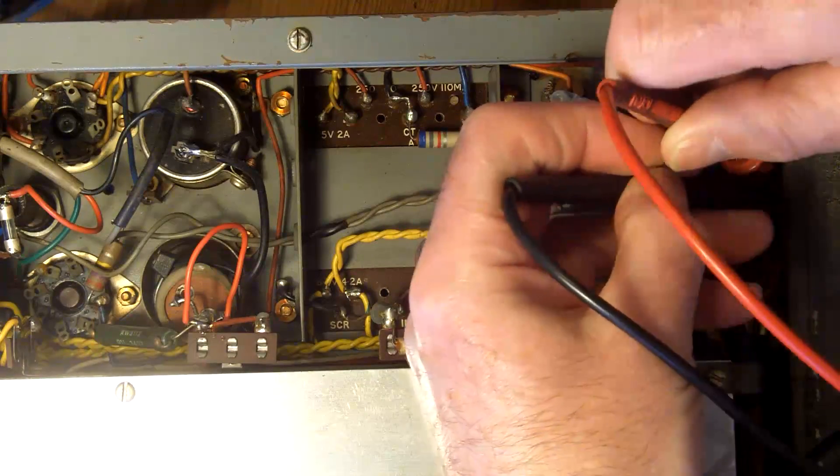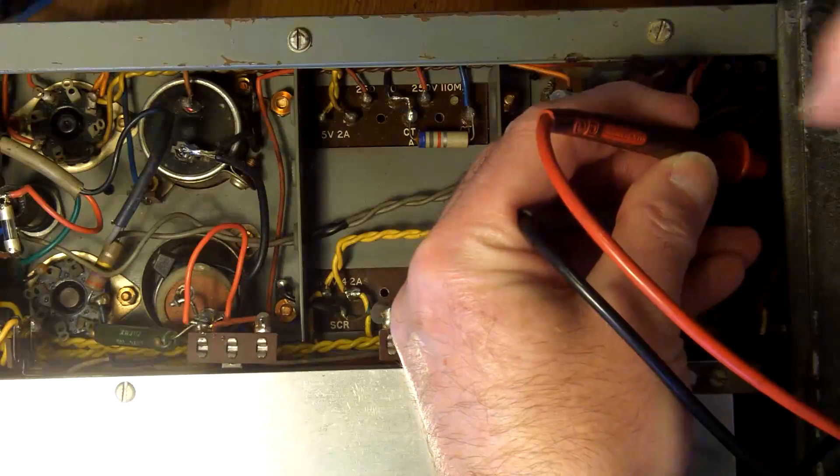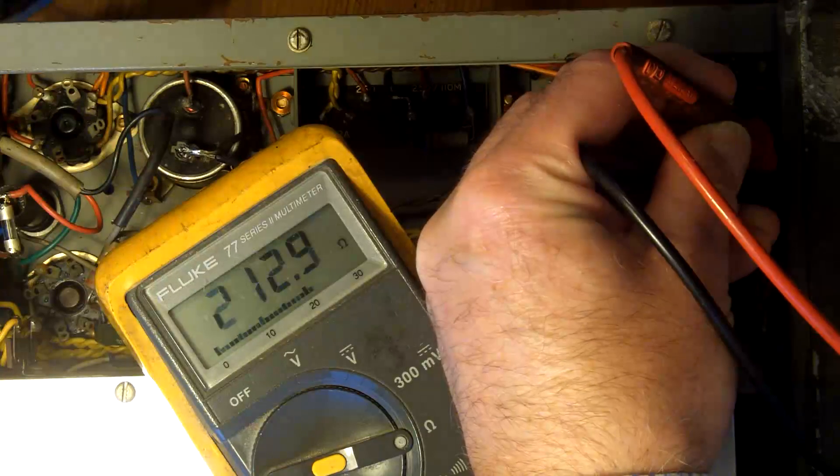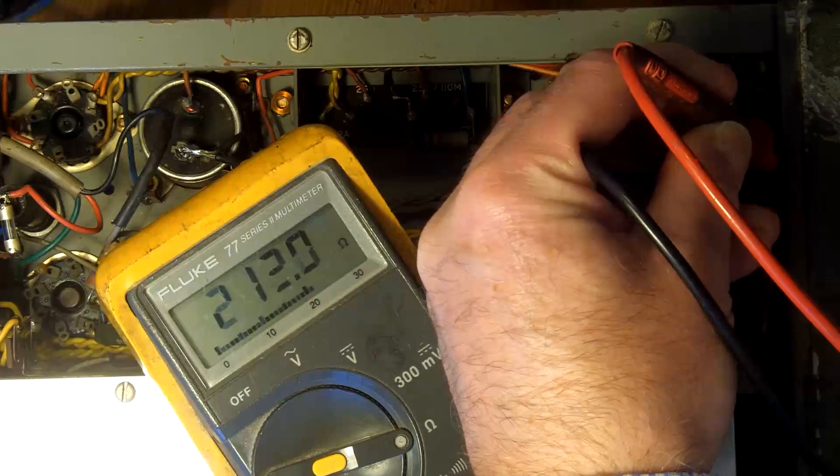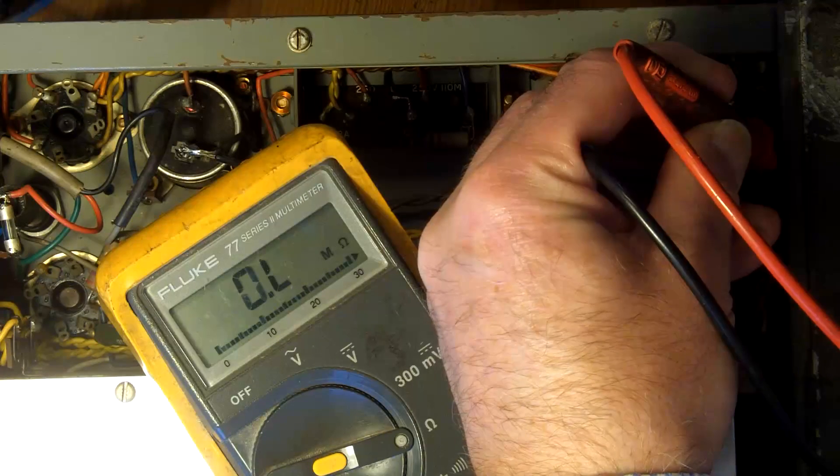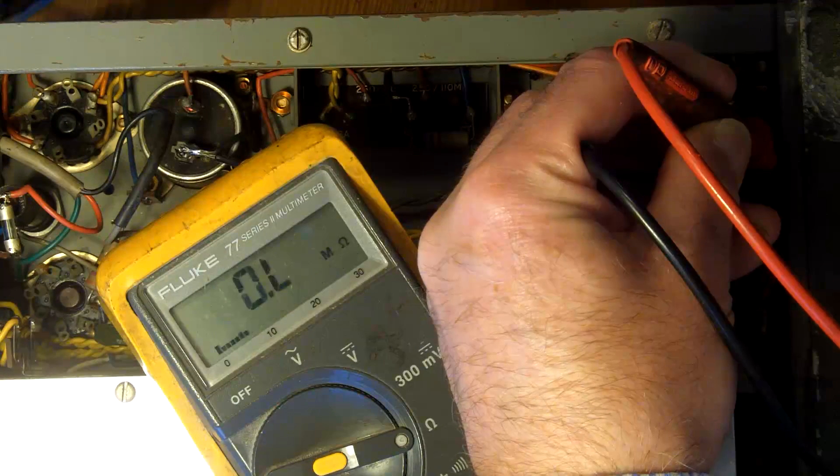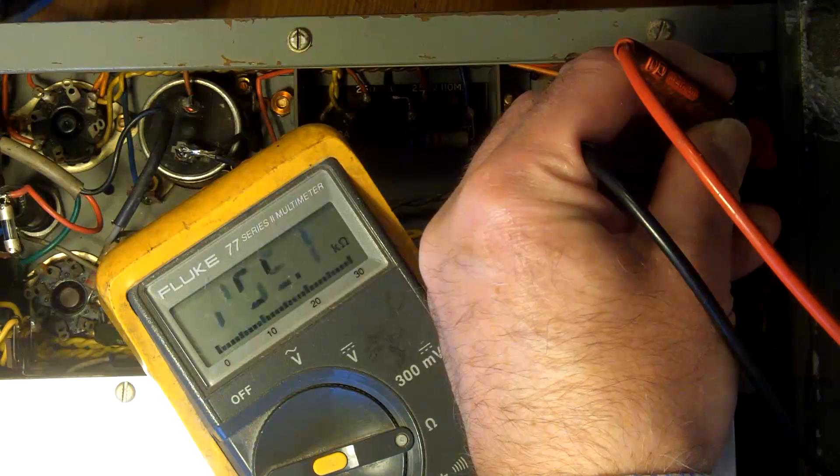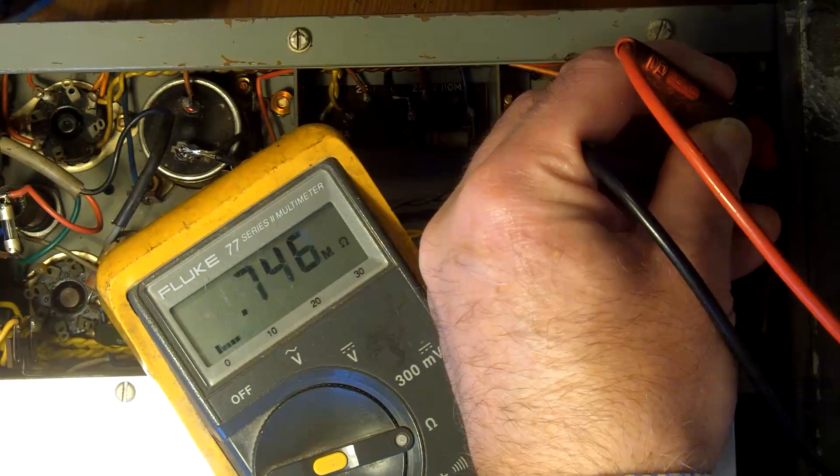Here I'm across the switch contacts, and you see on the meter there I've got 212 ohms. If I switch it off it's open circuit, 4 mega ohms, so I'm just teasing the switch there.